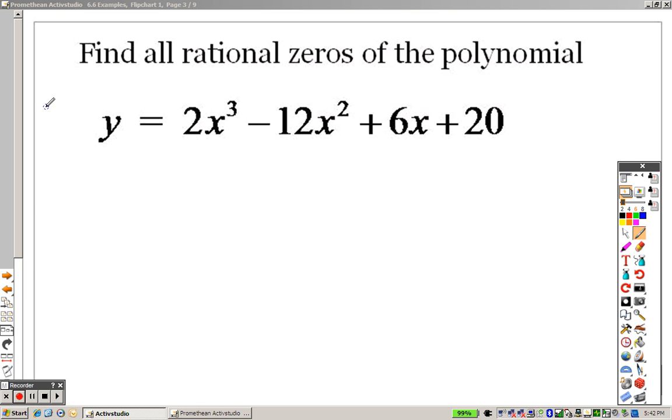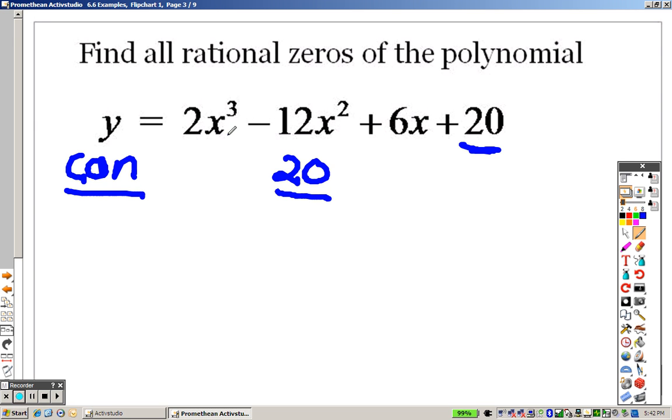When we're doing this, just as a little bit of a reminder for you here, it's the constant over the coefficient. So whatever the constant number is, which in this case happens to be 20, over whatever the coefficient is, which happens to be 2.